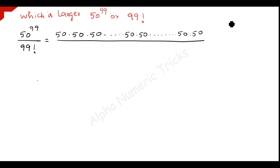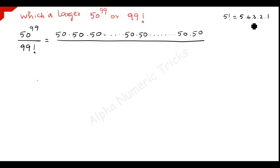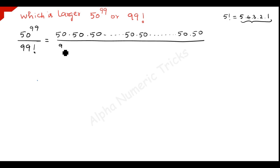How will you write 99 factorial? Consider what 5 factorial is: 5 factorial can be written as 5 times 4 times 3 times 2 times 1 — how many numbers do we have here? 5 numbers. For 5 factorial we have 5 numbers. In the same way, how will you write 99 factorial?